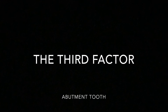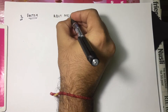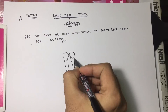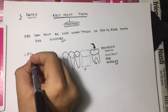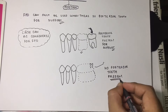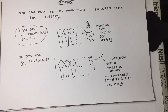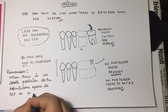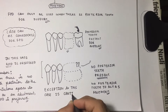The third factor is the abutment tooth position, which plays a major role. FPD can only be used when there is a posterior tooth available for support. If a case presents with no posterior teeth to act as an abutment, RPD is preferred. When there is no tooth posterior to the edentulous space to act as an abutment, RPD is indicated. There is one exception to this — the cantilever fixed partial denture.